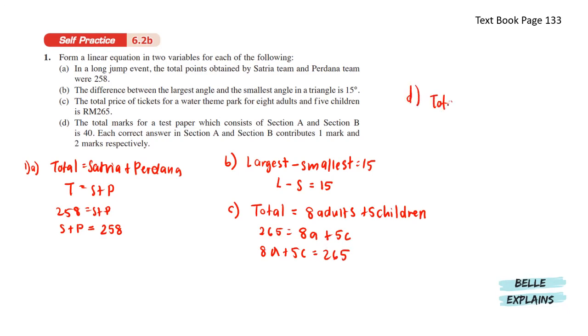And lastly, the total marks for a test paper which consists of section A and section B is 40. So here we have the total is a sum of section A and section B. Total is 40 equals A plus B.